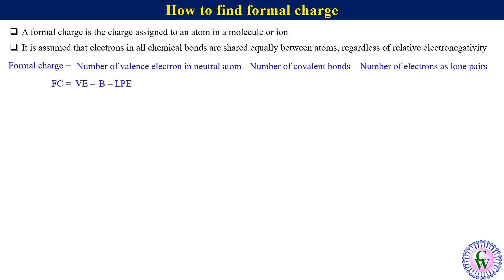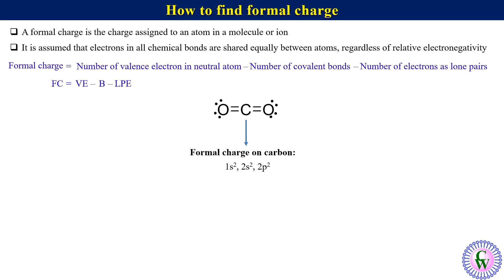Let's take the example of calculating formal charge on each atom of carbon dioxide. This is the Lewis structure of carbon dioxide. Let's first calculate the formal charge on carbon. The electronic configuration of carbon is 1s², 2s², 2p². We can see that the number of valence electrons in carbon is 4, so Ve = 4.